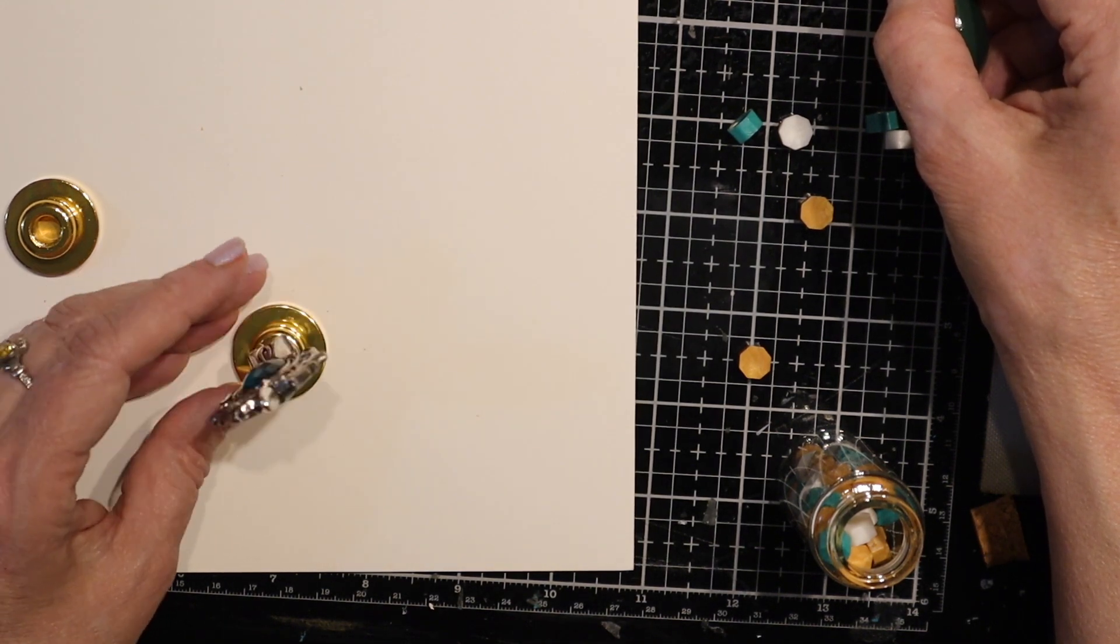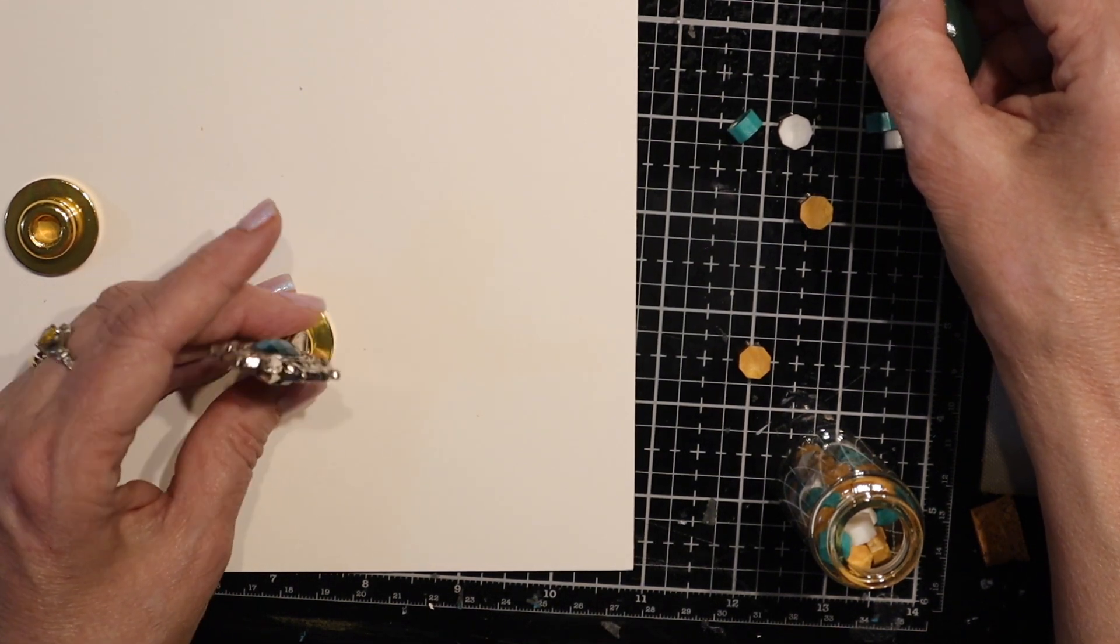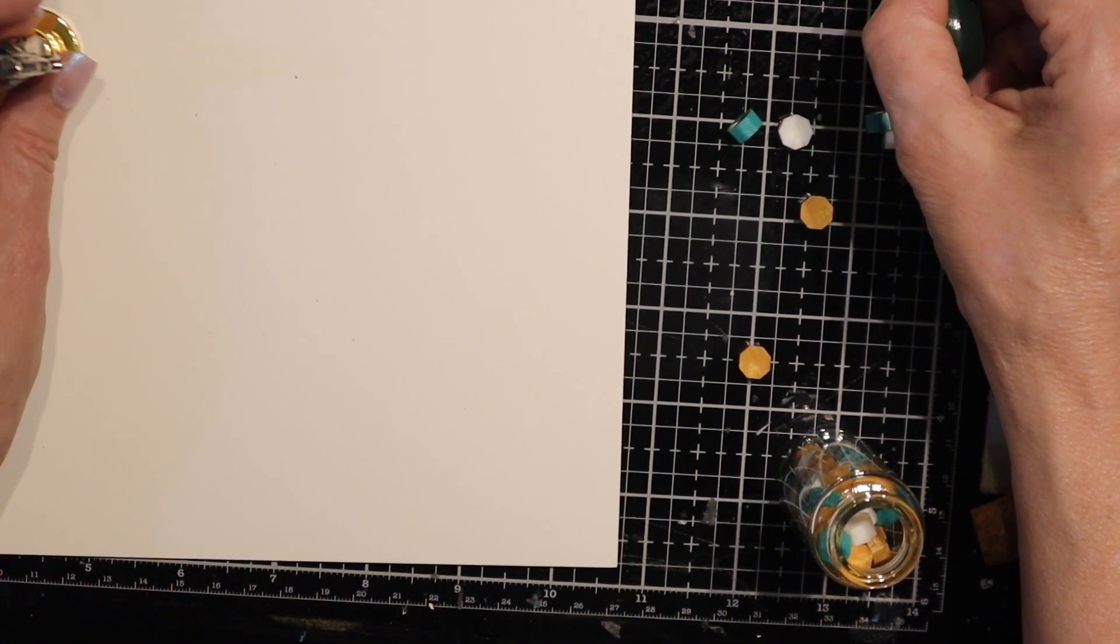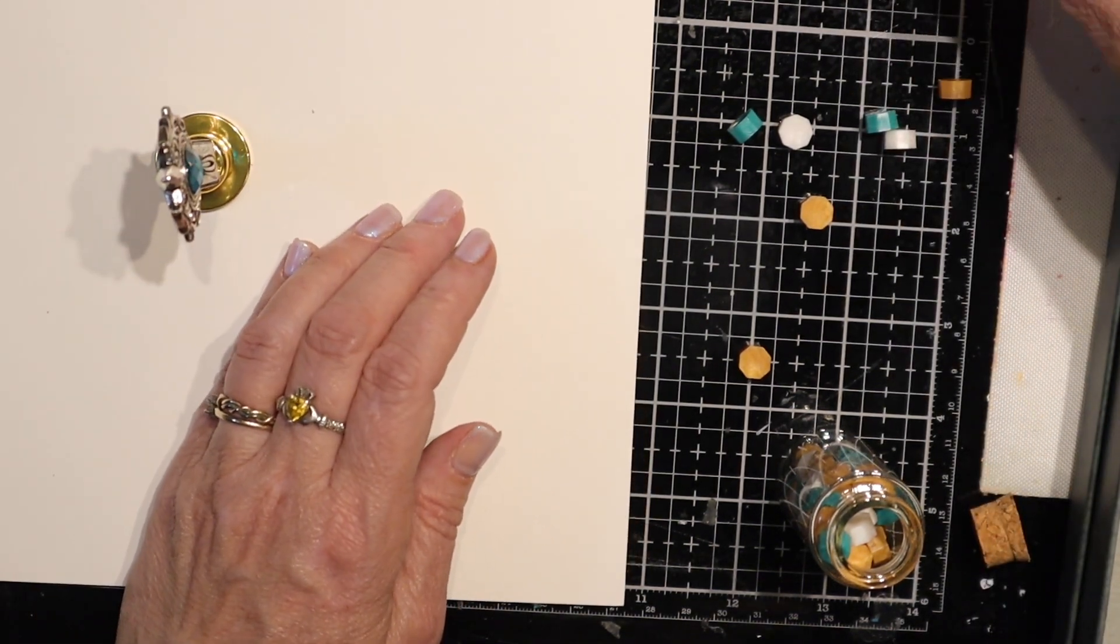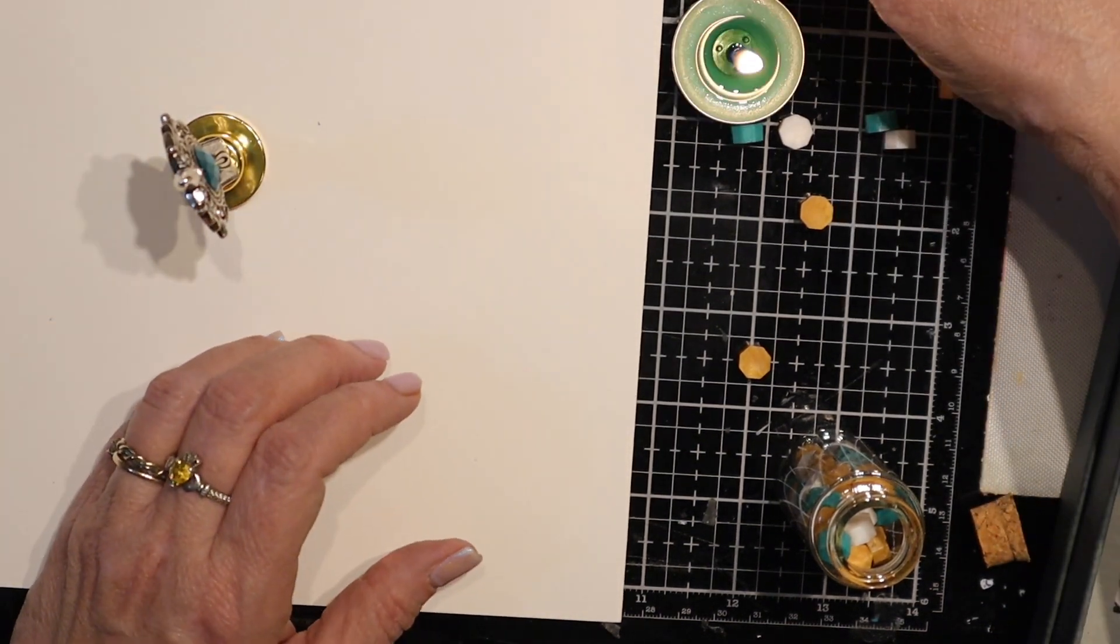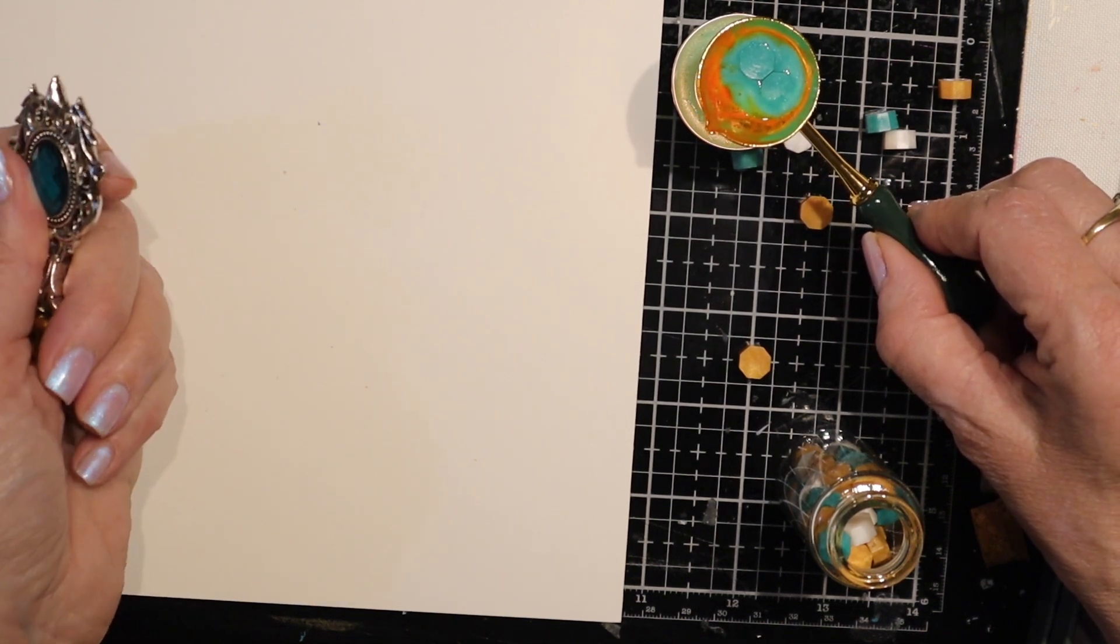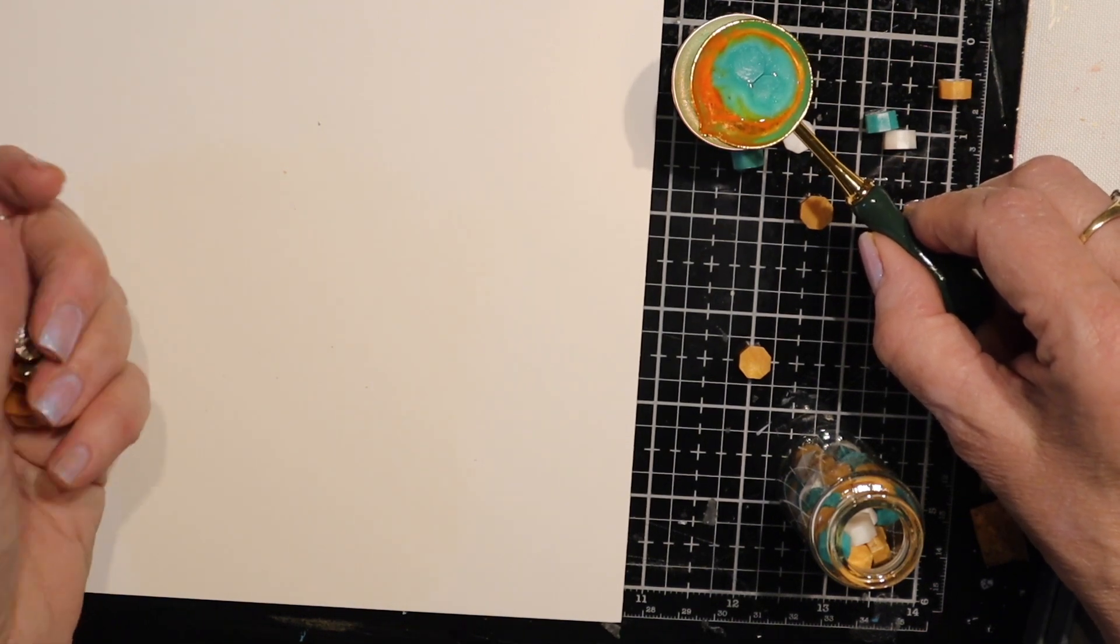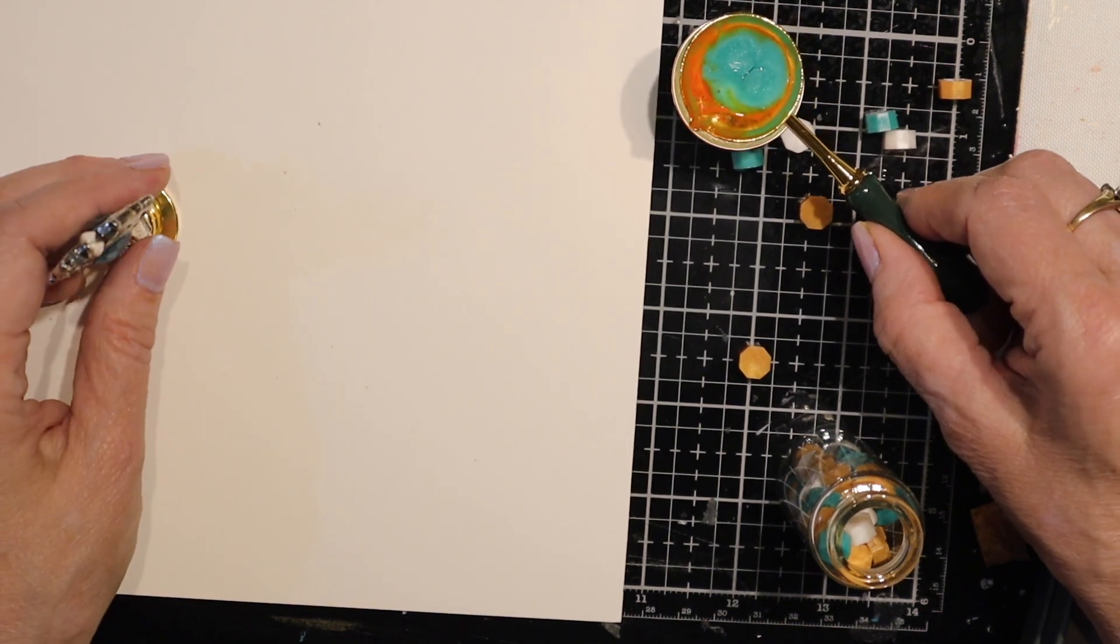I can't remember who it was that said they do a bunch of wax seals in advance. It might have been Lolly. They do the seals in advance just on plain paper and then they can just attach it later. It could have been Lolly, it could have been Little Rhonda Lee. I can't remember.